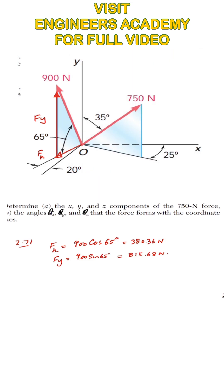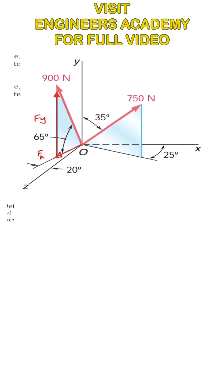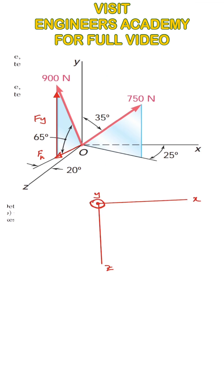We are also given that the line along which FH is acting makes a 20 degree angle with the Z axis. We can further resolve FH into two rectangular components. From the top, we can see the X and Z axes, and the line along which FH is acting, making 20 degrees.